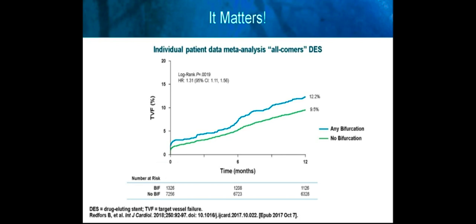Bifurcations do matter. In this individual patient data meta-analysis of all common drug-eluting stents, including over 13,000 patients, you can clearly identify that there is a significant increase in target vessel failure in any bifurcation compared to those patients without bifurcations at one year.